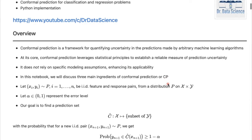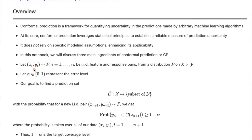To start, let's say that we have a set of n IID feature-response pairs. The X_i's are the inputs and Y_i's are the outputs, and the goal is to predict them for a new test data point. We are assuming that they are IID — independent and identically distributed — and later on we're going to relax this assumption.